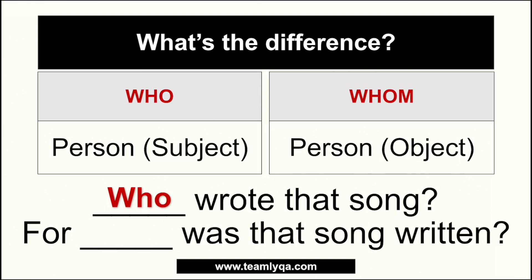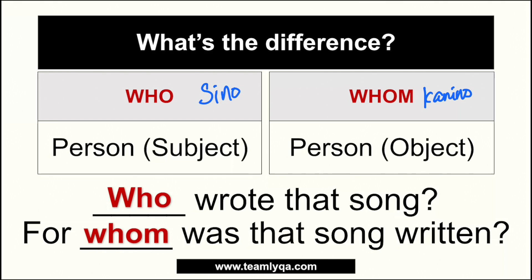Many people confuse 'whom' and 'whose' because in Filipino both can translate to 'kanino.' The difference is that 'whose' is used for possession — pagmamayari. For example, 'Blank song is that?' — you're asking kaninong kanta yan, so we're talking about ownership. The answer is 'whose': 'Whose song is that?' So 'whom' is about receiving, while 'whose' is about owning. Again, I have a full lesson on whose vs. who's linked above if you need more practice.